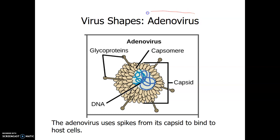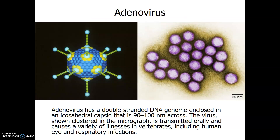Another shape is the adenovirus. The adenovirus contains a capsid only — it does not contain an envelope. The capsid is composed of capsomeres, which you can see here, and you can also see the glycoproteins used for attaching to the host — they look like spikes. The adenovirus has double-stranded DNA for its genetic material, and the shape of its capsid is called icosahedral.